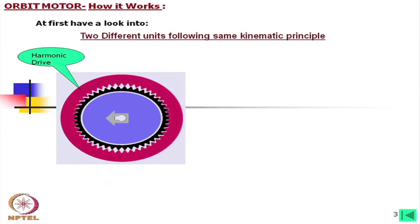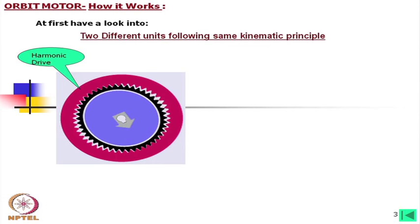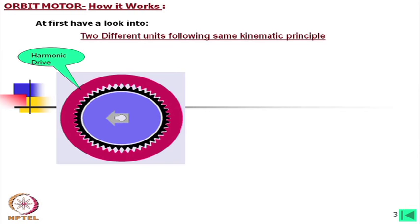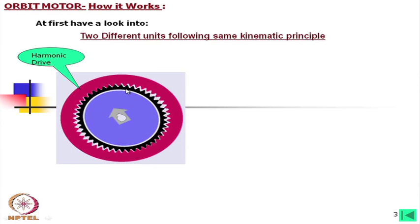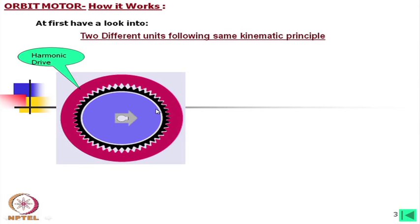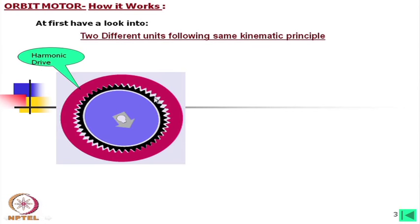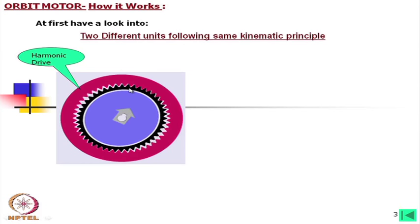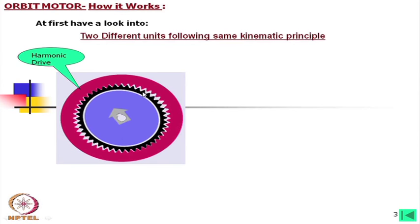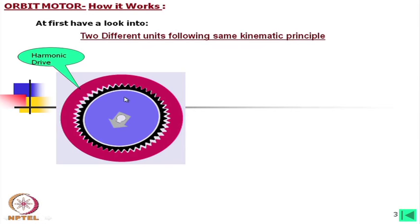This is a harmonic drive, where the outer member is fixed. The inner member, which is a flex gear, is rotated by a cam. If we observe very closely, we find that this flex gear is rotating at a very slow speed. In turn, it is transmitting very high torque. The ratio is nothing but the teeth number in the flex gear divided by the difference of the teeth. Suppose there are 100 teeth on the flex gear — in a single stage we get a reduction of fifty.